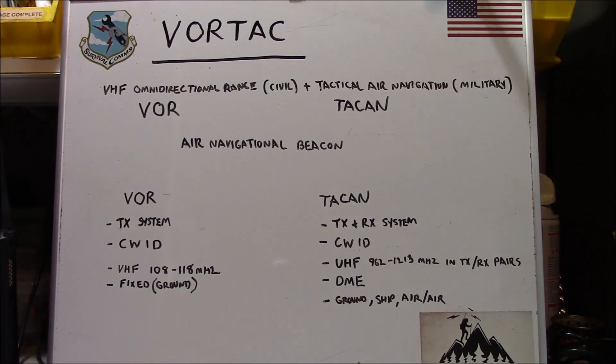The TACAN is a transmit and receive system. That means that the TACAN itself has a receiver as well as a transmitter. And what that's used for is for the distance measuring functionality of the TACAN. The aircraft in question would send a pulse pair to the TACAN. The TACAN would respond back with a pulse pair. And the differences in time from sending to receiving give you a very good estimation of just how far away you are from the TACAN station. The TACAN also periodically identifies in Morse code. It operates in the UHF range of 962 to 1213 megahertz in pre-established transmit and receive pairs. And again, it features DME functionality or distance measuring equipment functionality. And the more compact profile of a TACAN allows it to be mounted not only on the ground, but also on a ship or in an air-to-air role.